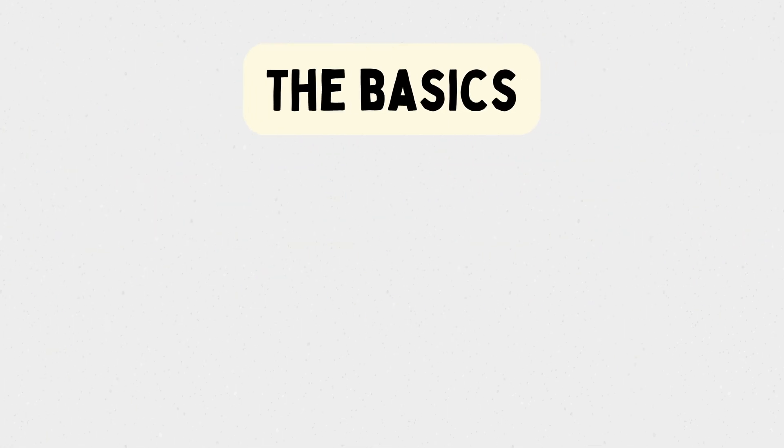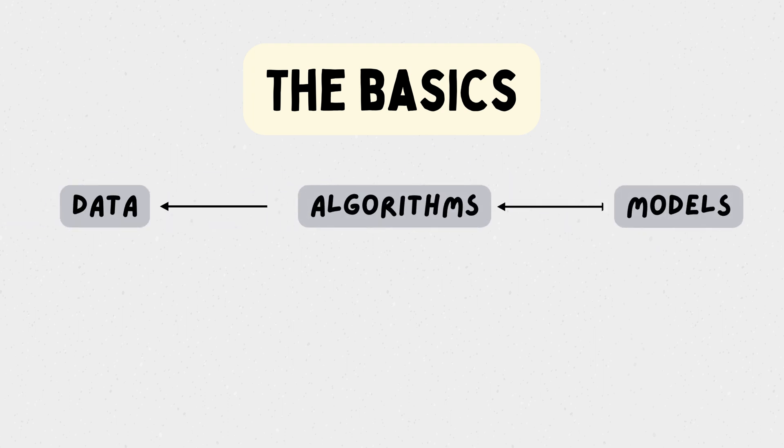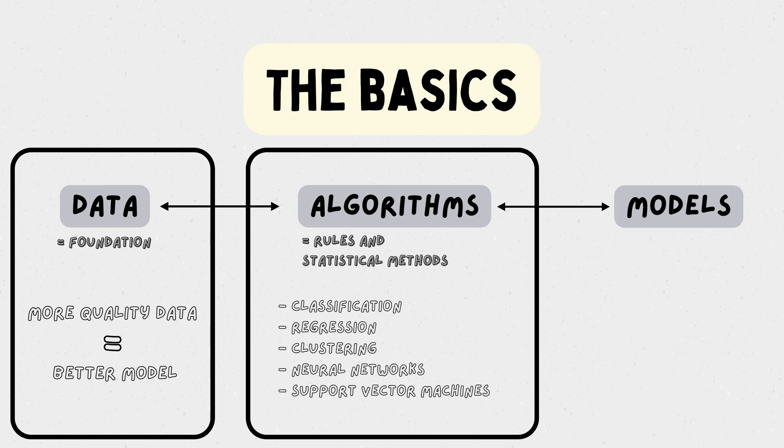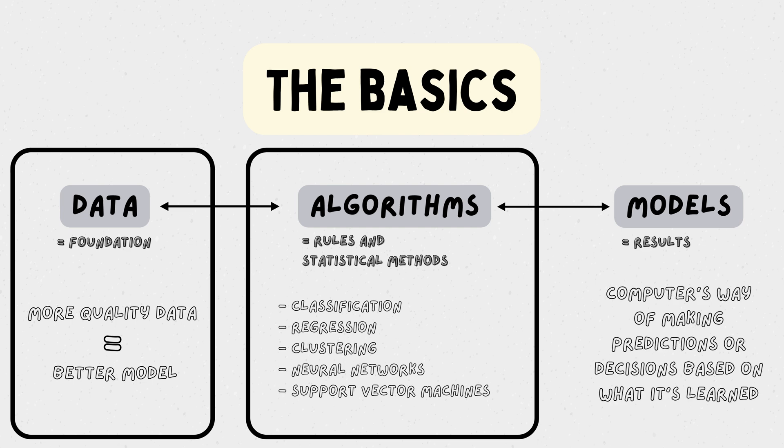Let's break down the basics. Machine learning involves three key components: data, algorithms, and models. Data is the foundation. The more quality data you have, the better your machine learning model can learn. Algorithms are the rules and statistical methods that guide the learning process. And models are the results. They are the computer's way of making predictions or decisions based on what it's learned.